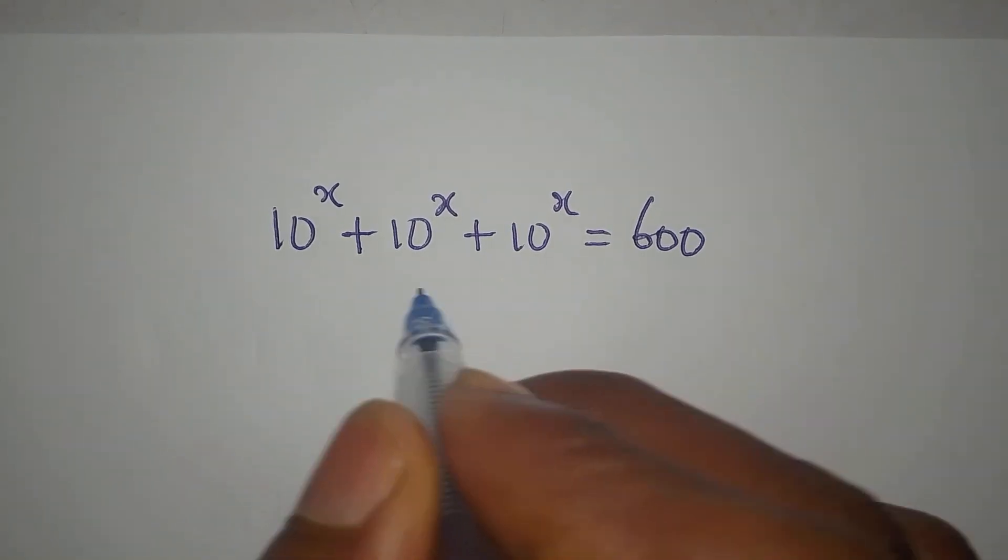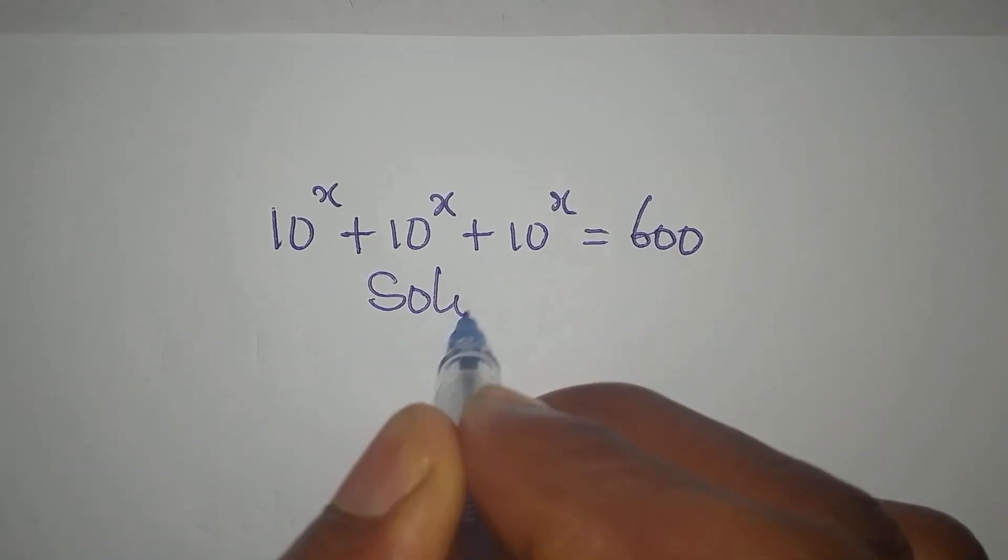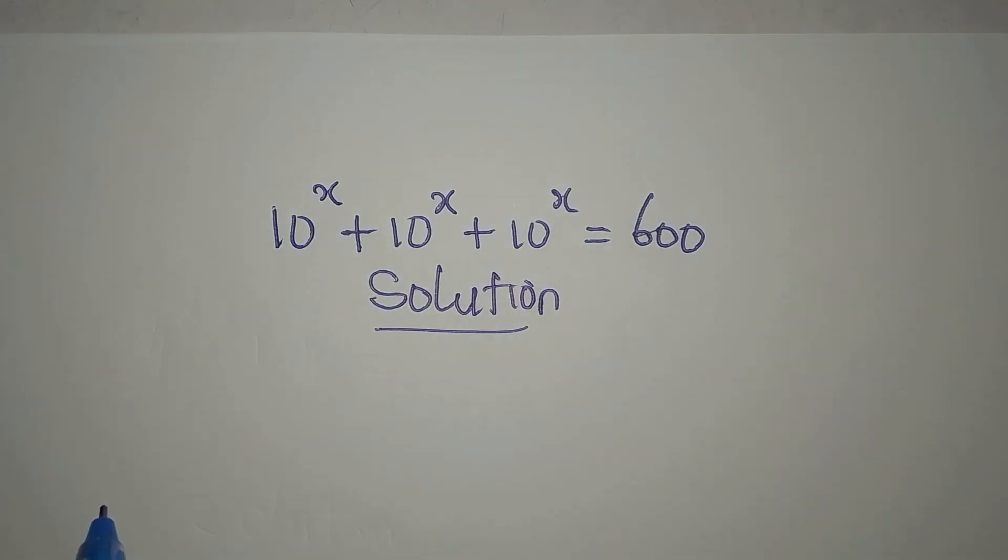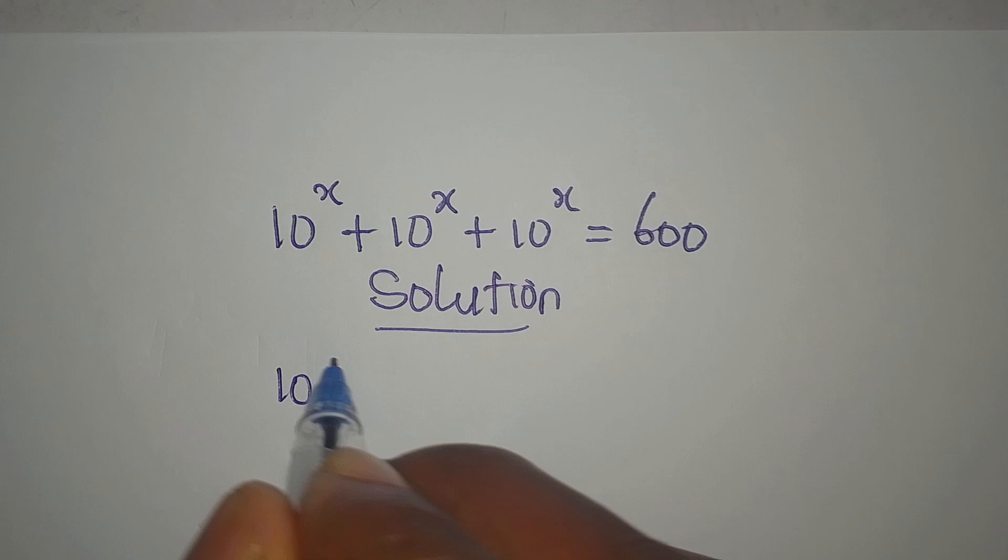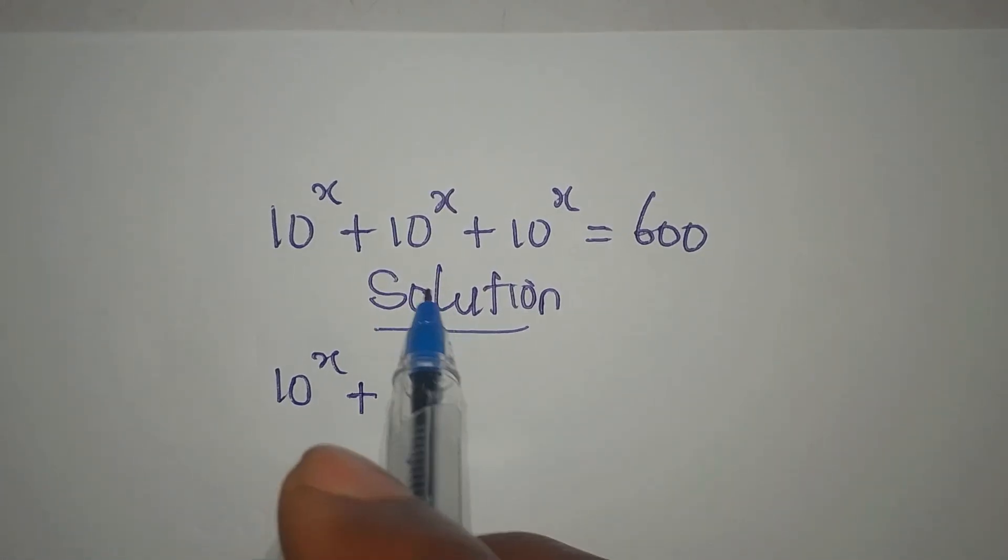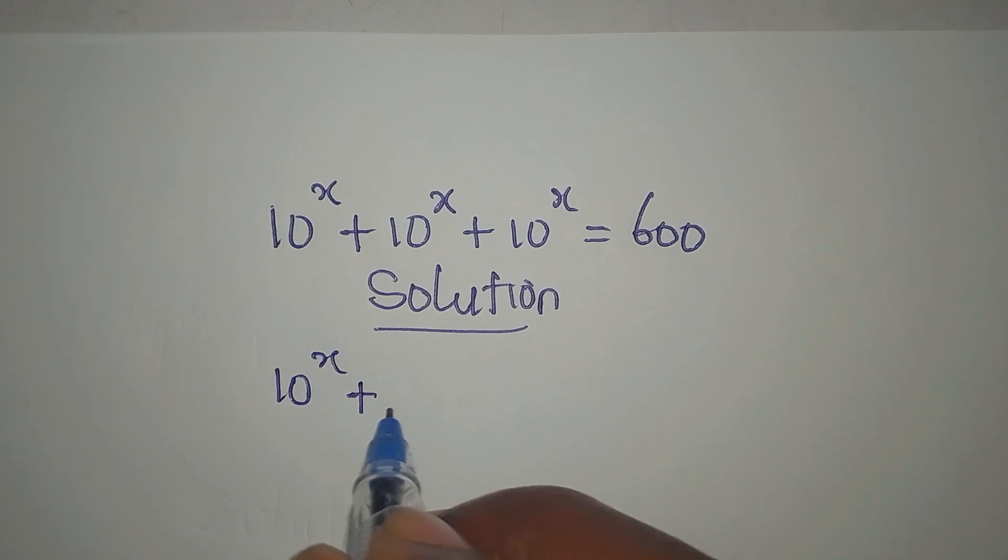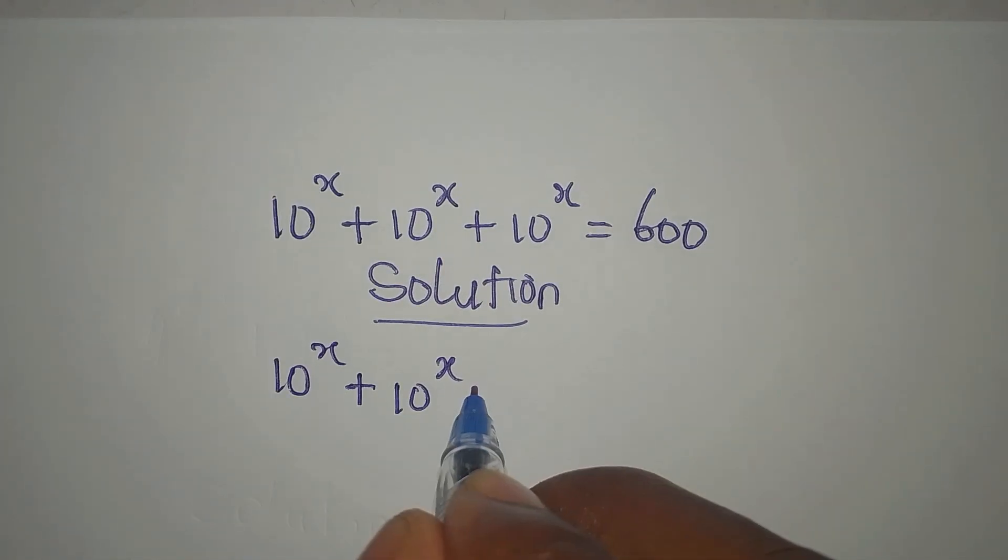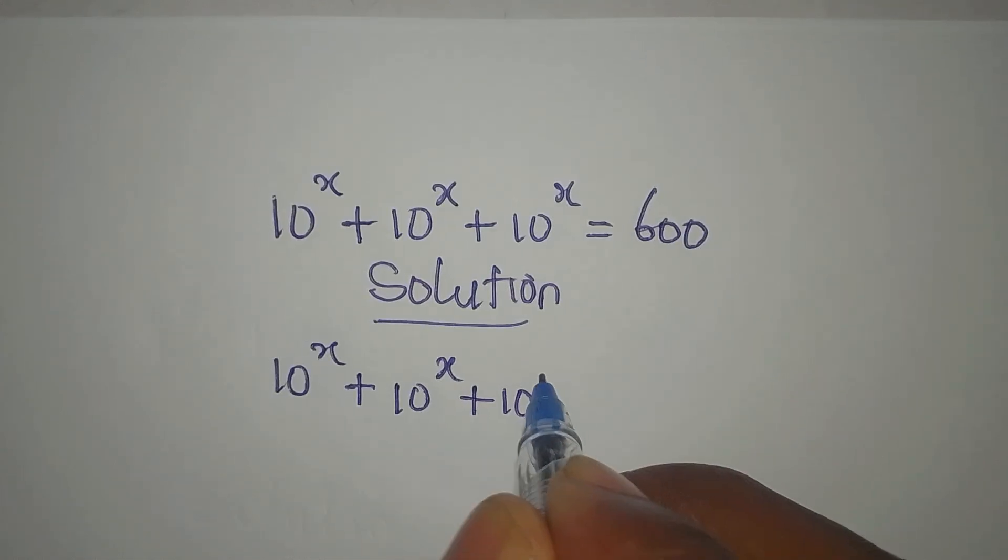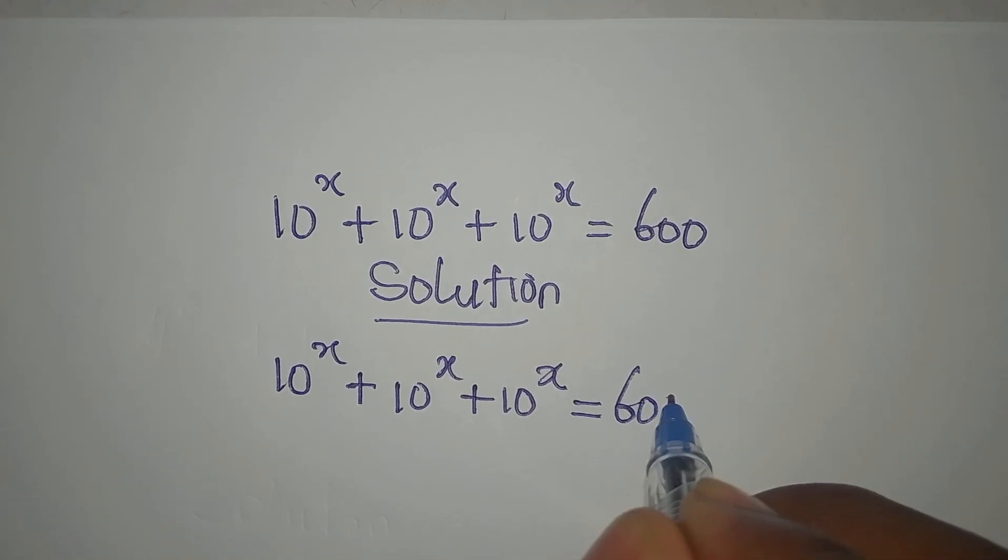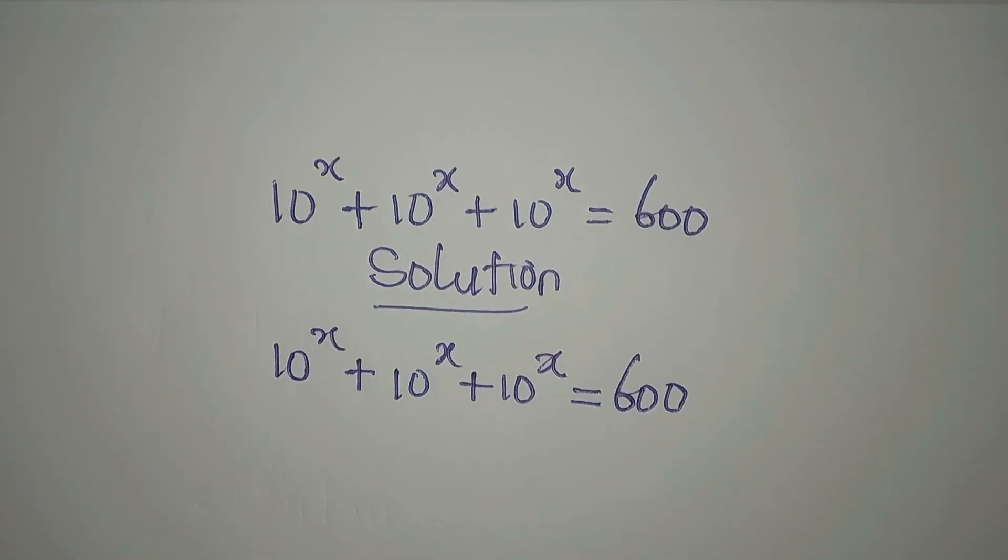Hello everyone, you're welcome to Feel-Good Mathematics. Here we provide solutions to mathematical equations. Here is what we have to deal with: we have 10 to the power of x plus 10 to the power of x plus 10 to the power of x equals 600. Now what do you think will be the first step?